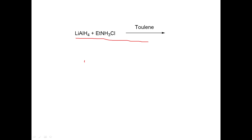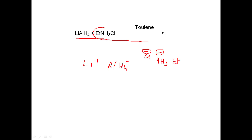Lithium aluminum hydride is written as Li⁺ and AlH₄⁻. The quaternary ammonium salt is written as NH₃Et⁺, with a positive charge on the nitrogen stabilized by Cl⁻. The question has been framed smartly — the charges are not shown, but if you look carefully, nitrogen has four bonds, so there is a positive charge on it.